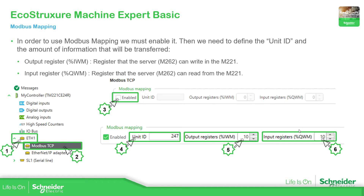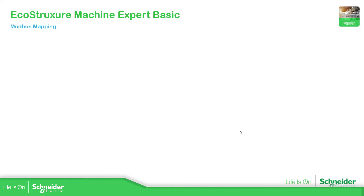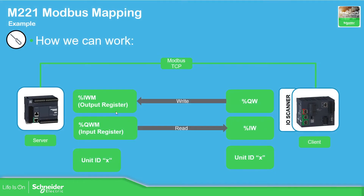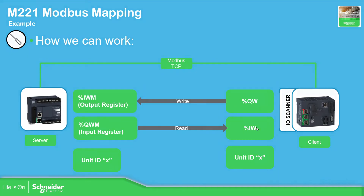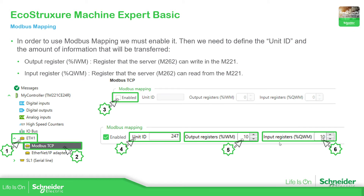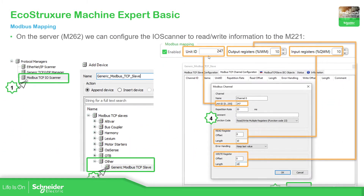So as a reminder: the output register is where information will be coming from the other side, and the input register is the information that the other PLC will be reading. Once we've configured that on EcoStruxure Machine Expert Basic, we need to do the same for the other PLC — in our case the M262.